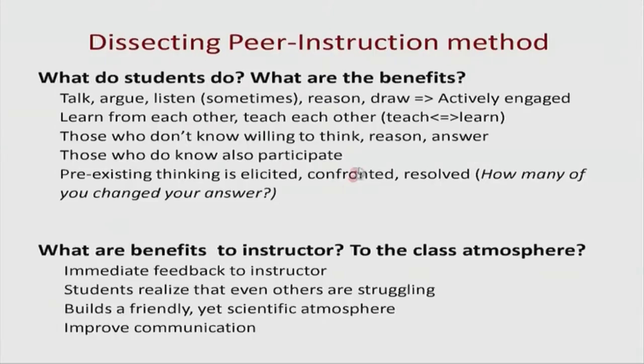If some of you had wrong answers — which many did — the idea is to get your answer out and try to confront and resolve what was wrong. From the teacher's perspective, peer instruction is extremely useful because it provides immediate feedback to the instructor. If 85 percent of students said four was the right answer, a teacher would know immediately that a large fraction of the class is not yet clear about the concepts, enabling real-time corrective action.